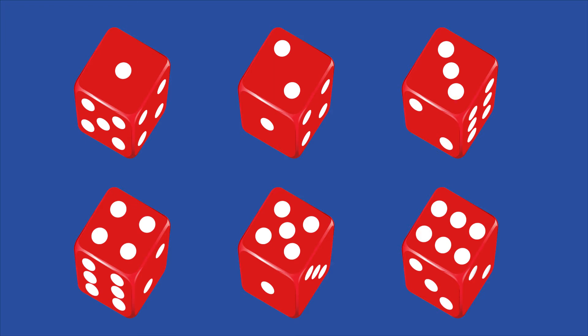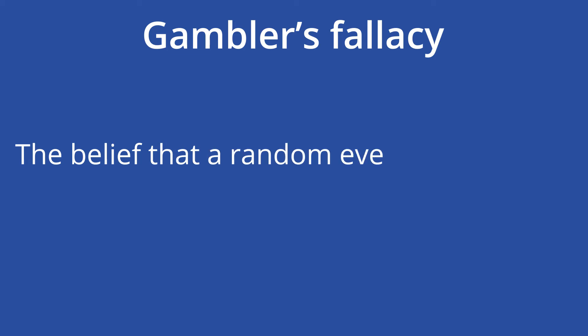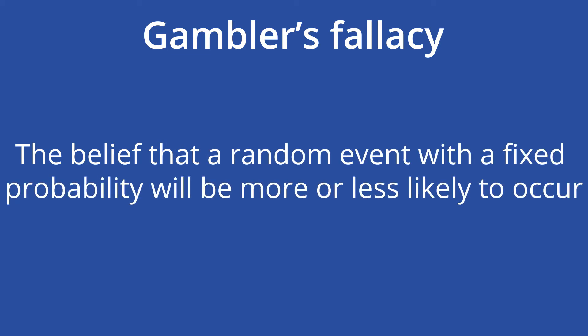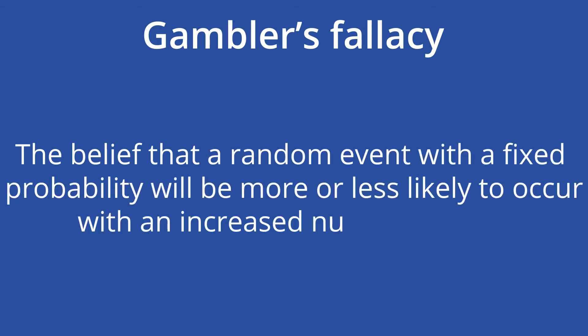We believe that a certain outcome, such as rolling a 1, is overdue because of previous circumstances like the string of bad rolls. In actuality, these events are independent. The Gambler's Fallacy is the belief that a random event or outcome with a fixed probability will be more or less likely to occur with an increased number of trials.